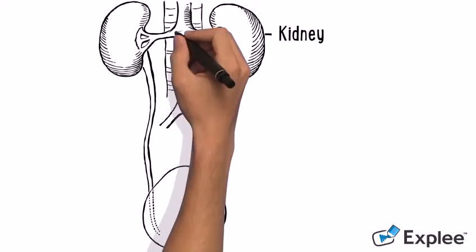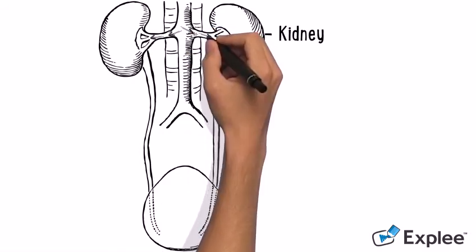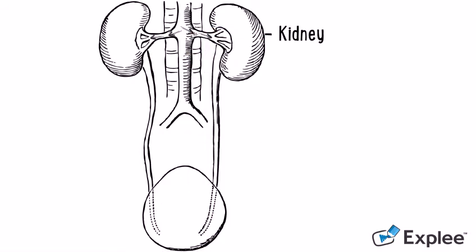Blood flows into the kidneys through the renal artery. Once in the kidneys, the blood flows through capillaries which then branch off and flow into filtration structures called nephrons.